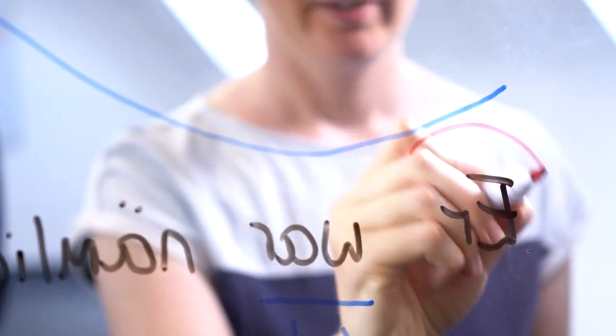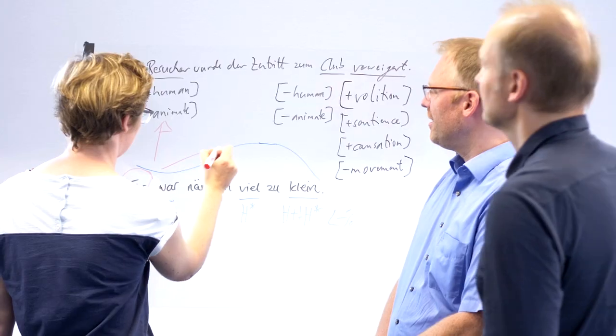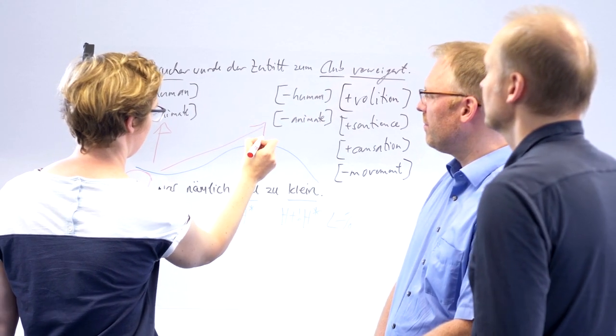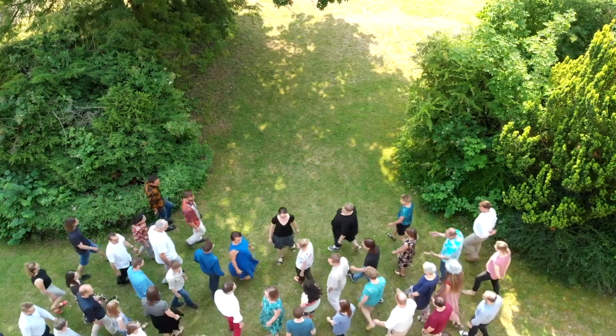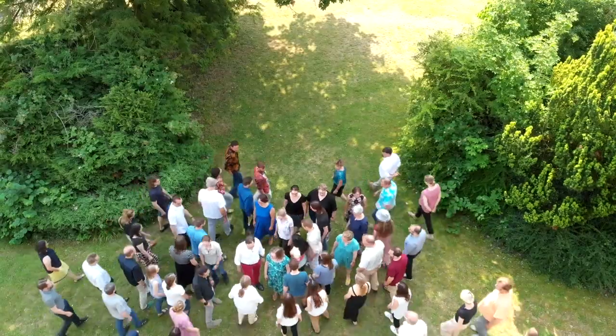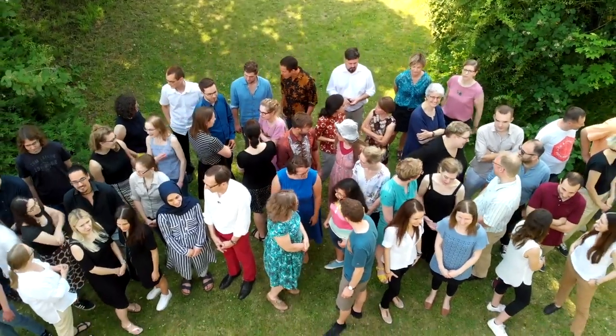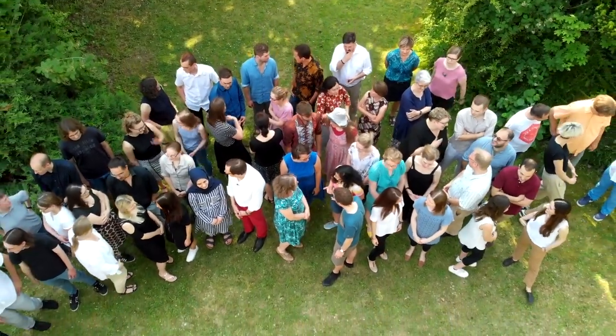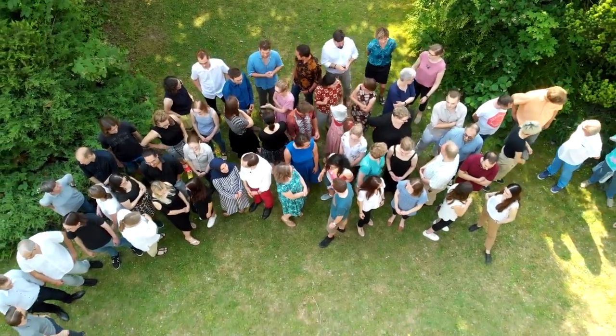Currently, the CRC Prominence in Language has three different areas. One area looks at prominence in phonology. The other area looks at prominence in morphosyntax. And the third area looks at prominence in discourse. In each of these areas, we have five to seven different projects contributing to the research questions of prominence in language. With the expertise of more than 70 scientists, we create a new understanding of language as a system between cognition and communication.